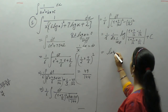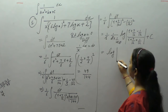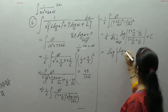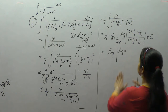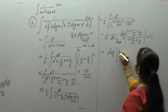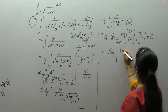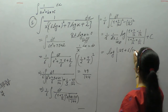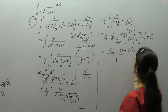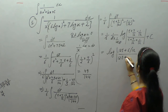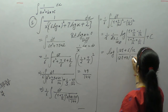Substituting back t = log x, we get the final answer: (1/2) · log|(12t + 6)/(12t + 8)| + C, that is (1/2) · log|(12 log x + 6)/(12 log x + 8)| + C.